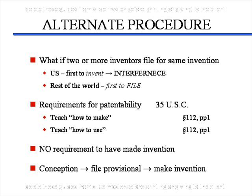If we go back and look at the requirements for patentability under Section 112, Paragraph 1, there were two requirements: you had to teach one skilled in the art how to make the invention, and also teach one skilled in the art how to use the invention. There is absolutely no requirement to have actually made the invention. Therefore, since all you have to do is teach one skilled in the art how to make and use the claimed invention, you can — following your conception — go file a provisional patent application, then go into the laboratory and do the work.